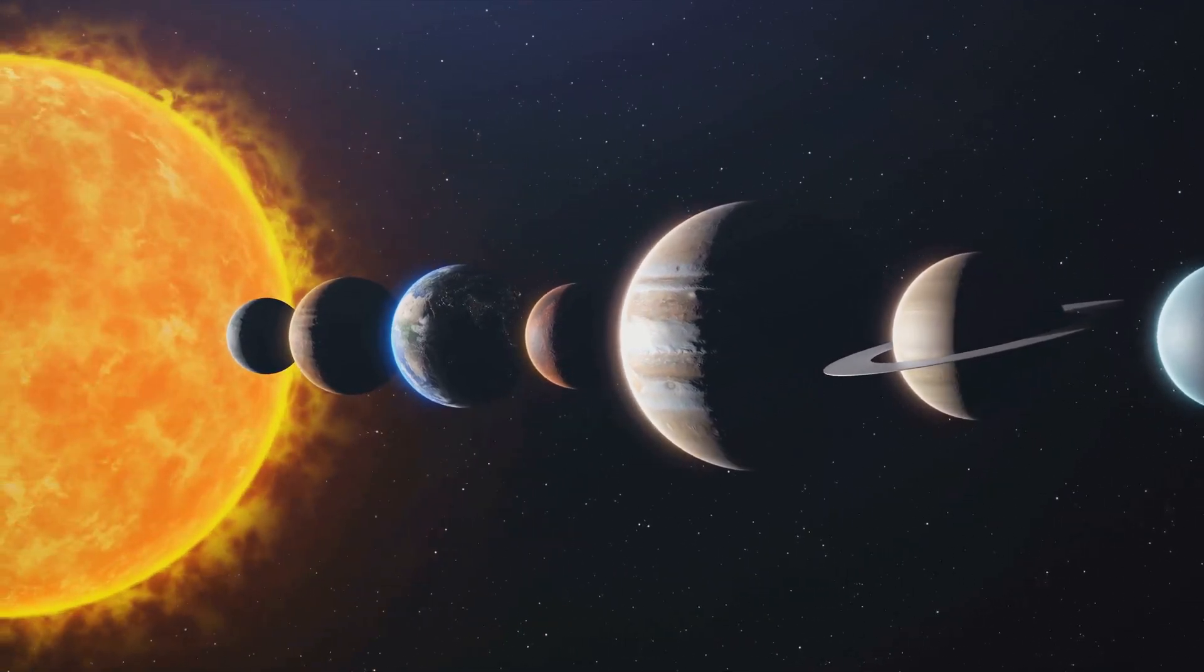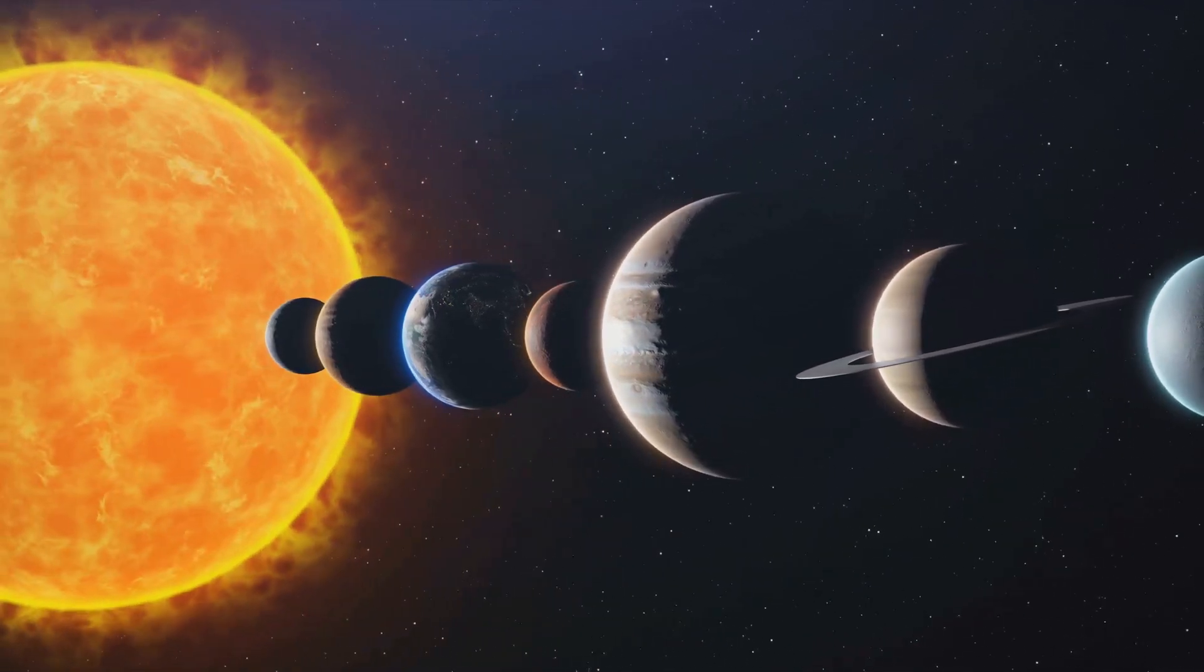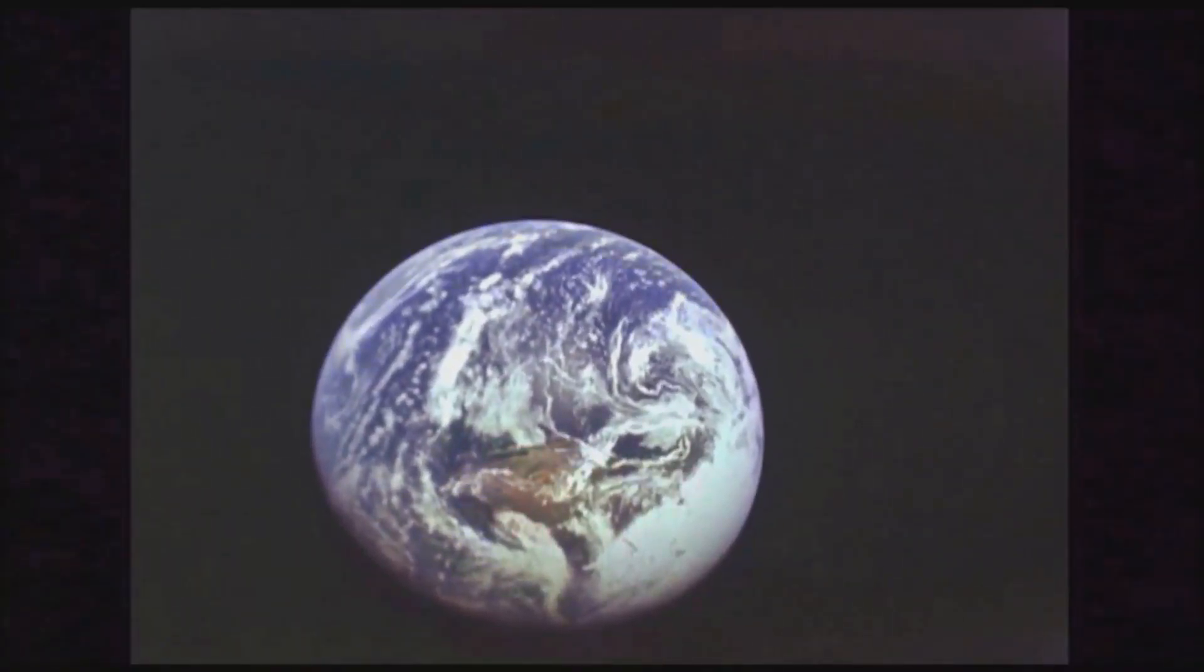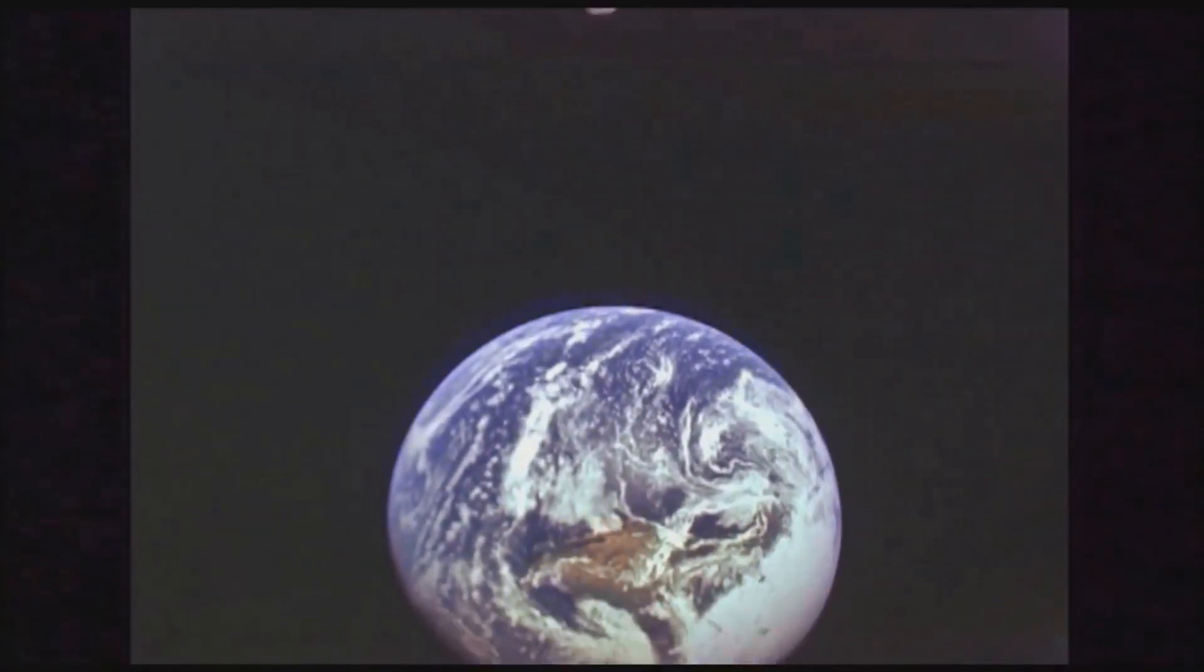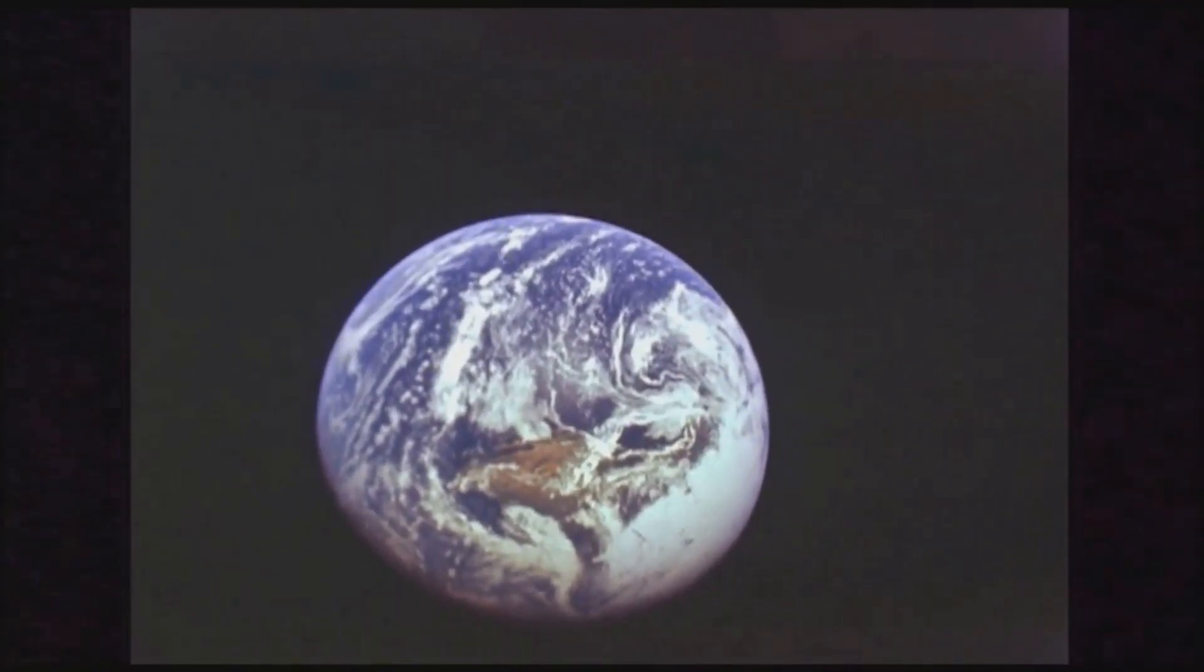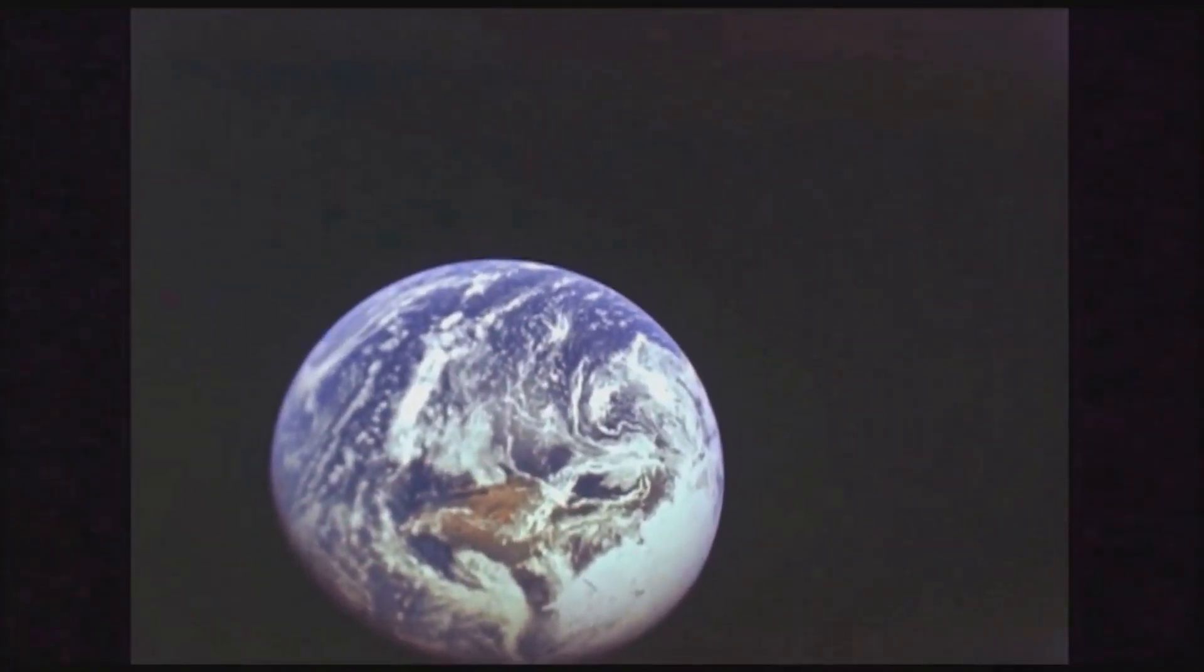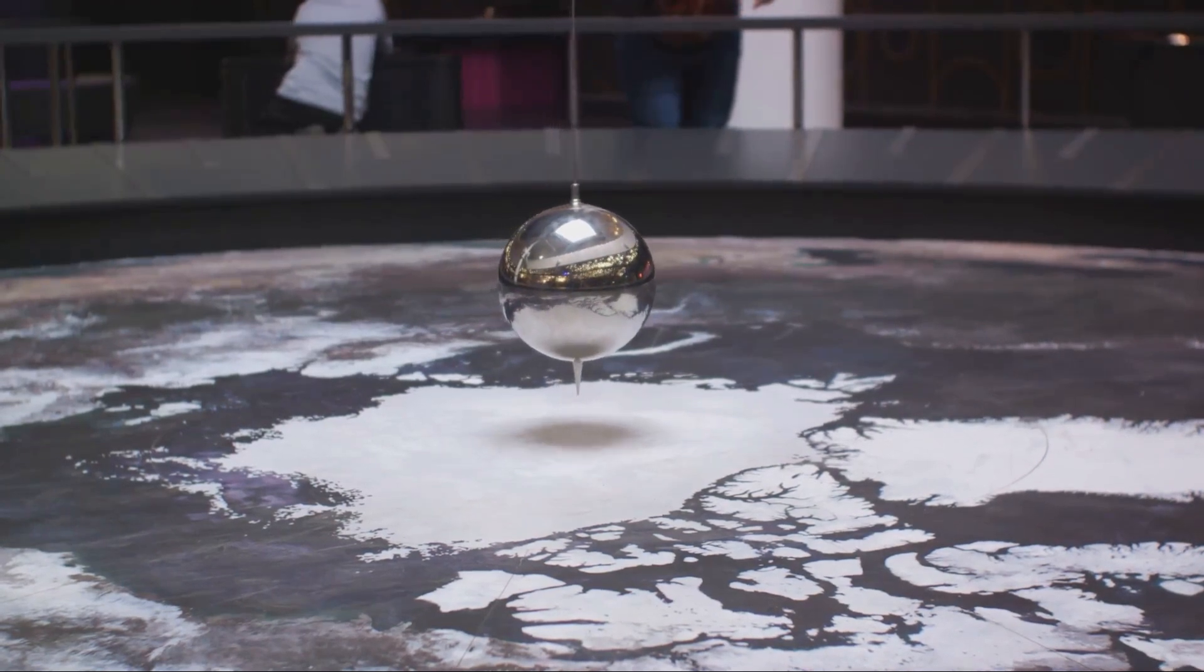The more mass an object has, the stronger its gravitational pull. Think about it. When you jump, you don't just keep floating up into the sky. You come back down. Why? Because Earth, with its massive size, has a strong gravitational pull that pulls you back. That's why we say gravity keeps us grounded.